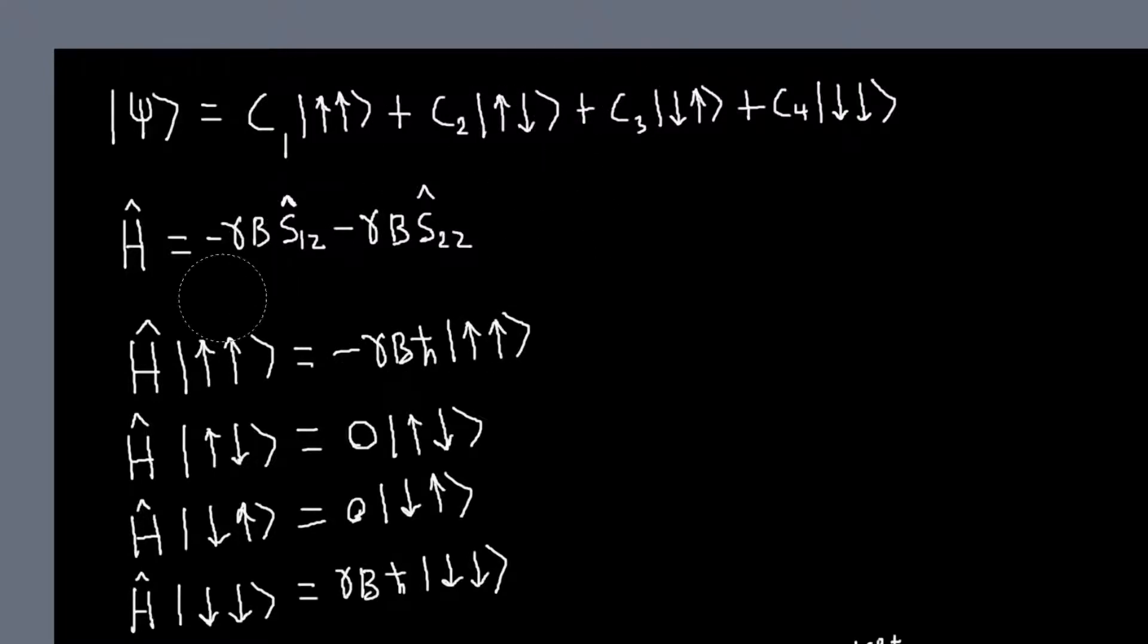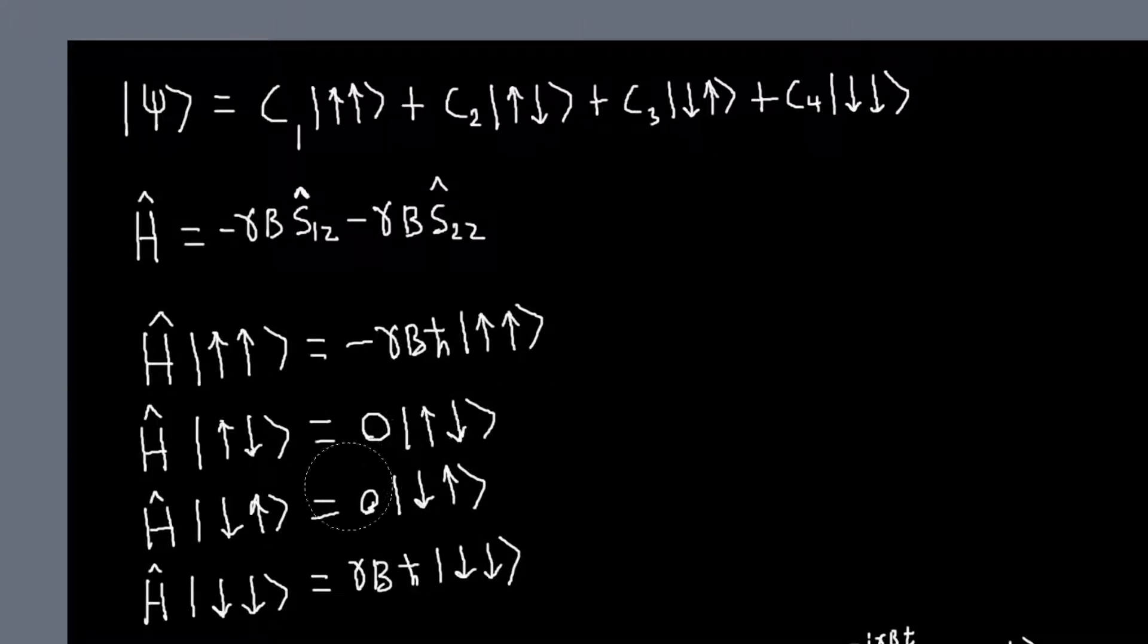For these middle two terms, for one of these, I'll get an h-bar over 2, the other one I'll get a minus h-bar over 2, so they'll cancel out, so they'll have eigenvalue 0. And then lastly, it's the opposite, I get a gamma b h-bar.